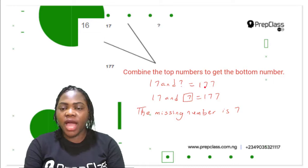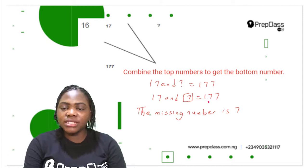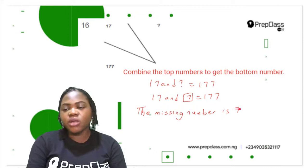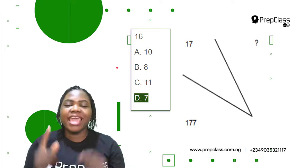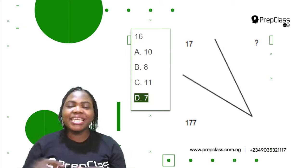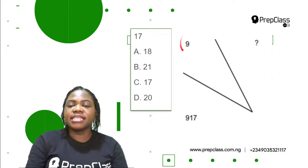We have to combine them. The bottom number is 177, and 17 is already there, so the missing top number is 7. When we combine 17 and 7, we get 177. So the missing top number is 7. Which of the options is correct? A is 10, B is 8, C is 11, D is 7. D is the correct option — 7! 17 and 7 combined together gives us 177.